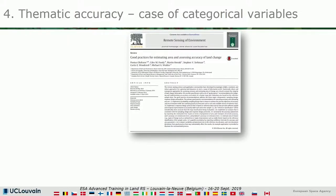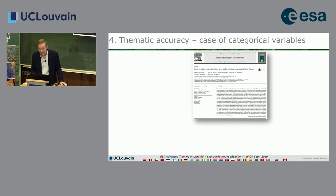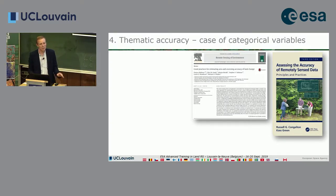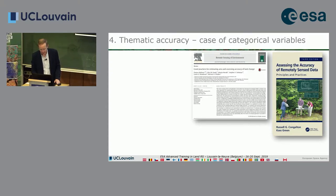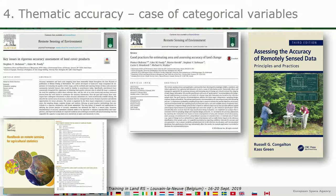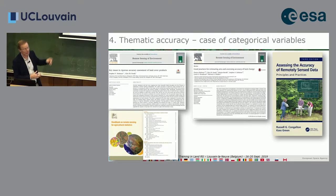Let's move to thematic accuracy. These are the key reference papers—a very good paper from Olofsson (2014), a book from Congalton, and a recent synthesis from Stehman and Foody in Remote Sensing of Environment in September 2019. For practical information, FAO has a handbook on remote sensing for agriculture statistics, available online, written for governments rather than scientists.